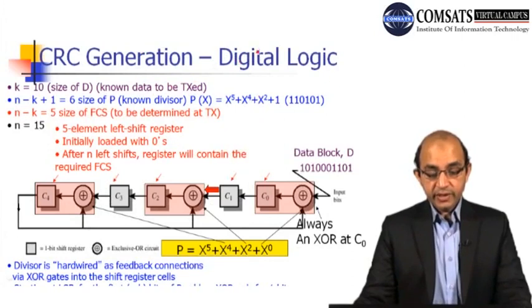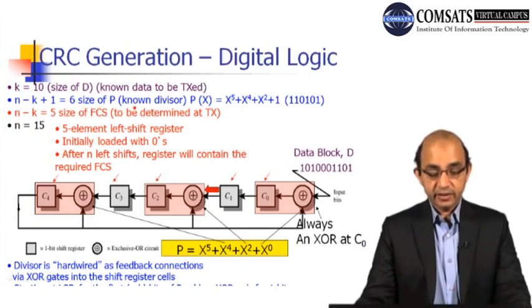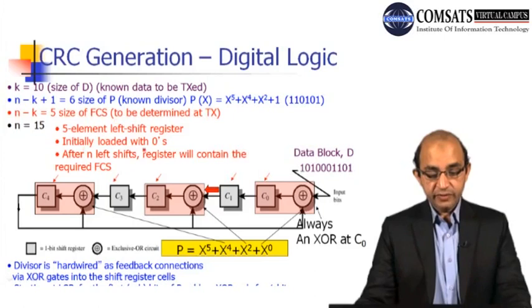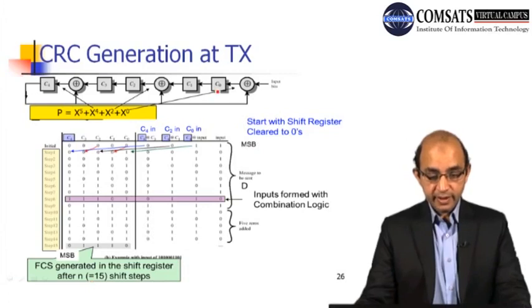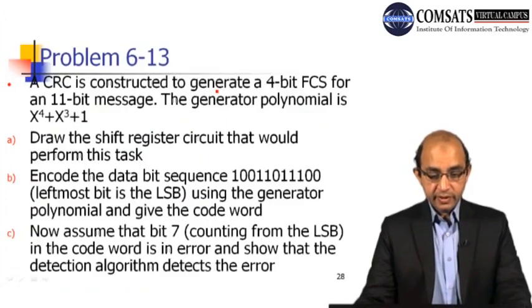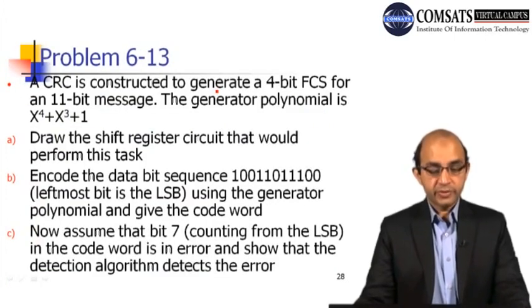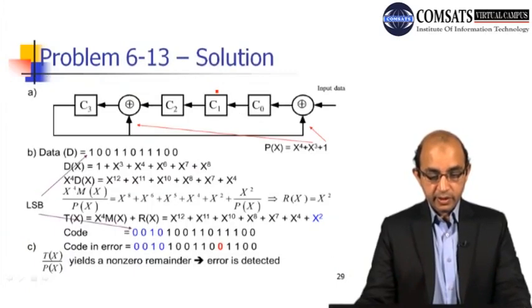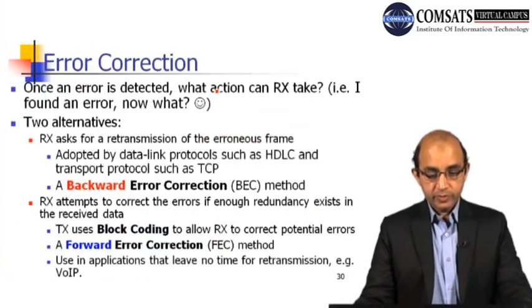The digital logic method uses XOR gates and shift registers. With k=10 data bits, divisor size, and n=15, we use a 5-element left shift register. Because the FCS is 5 bits, the register is initially loaded with zeros. After the left shifts, the register contains the required FCS. Examples of CRC at the transmitter and receiver sides are shown, and there are practice problems available to work through independently.